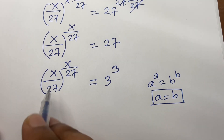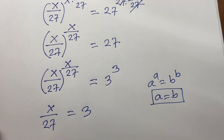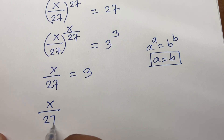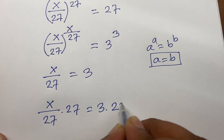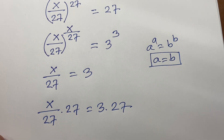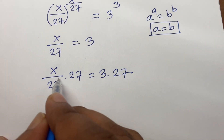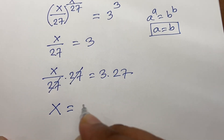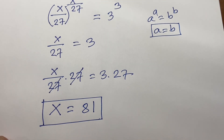So x/27 equals 3. Multiplying both sides by 27, the 27s cancel on the left. We find x equals 3 times 27, which equals 81. This is our final answer.